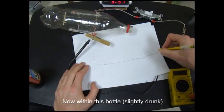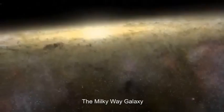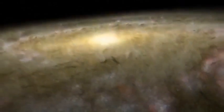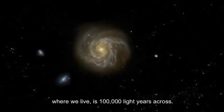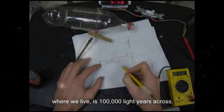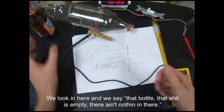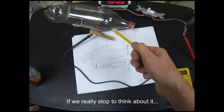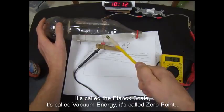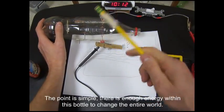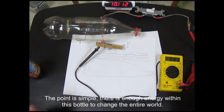Now within this bottle is a spiral arm galaxy. The Milky Way galaxy, where we live, is a hundred thousand light years across from end to end. We look in here and we say that bottle, that shit is empty. There ain't nothing in there. If we really stop to think about it, it's called the Planck scale, it's called vacuum energy, it's called zero point. The point is simple, is that there's enough energy within this bottle to change the entire world.